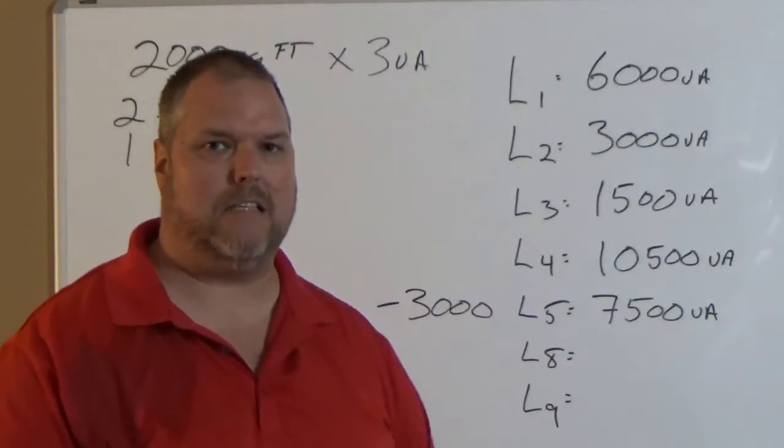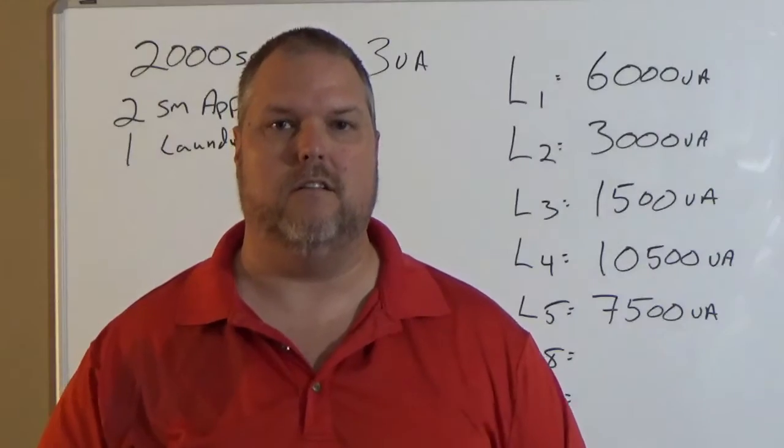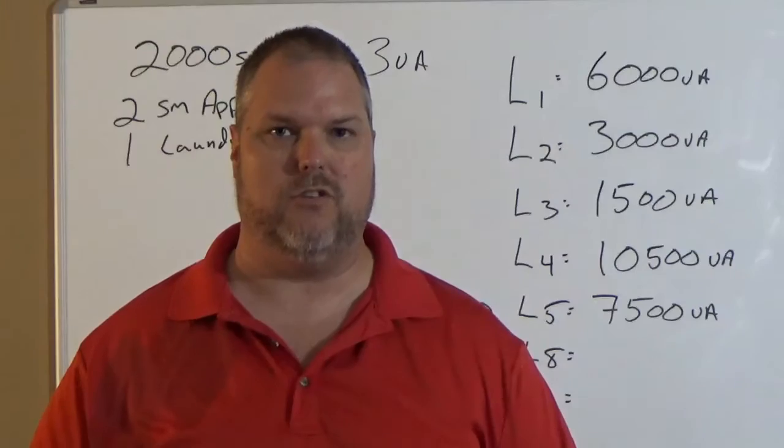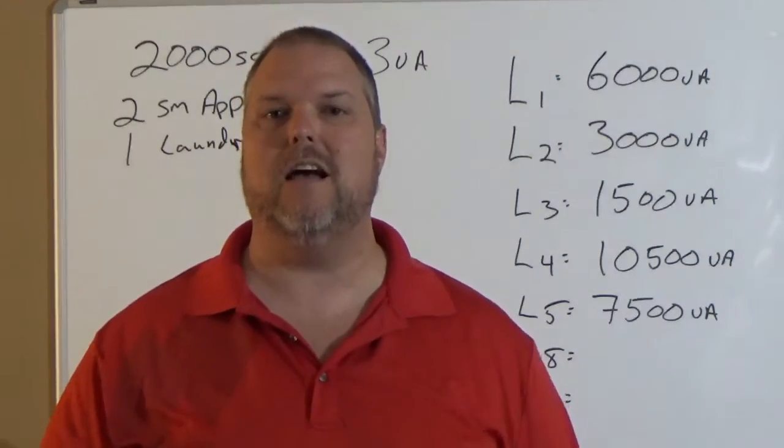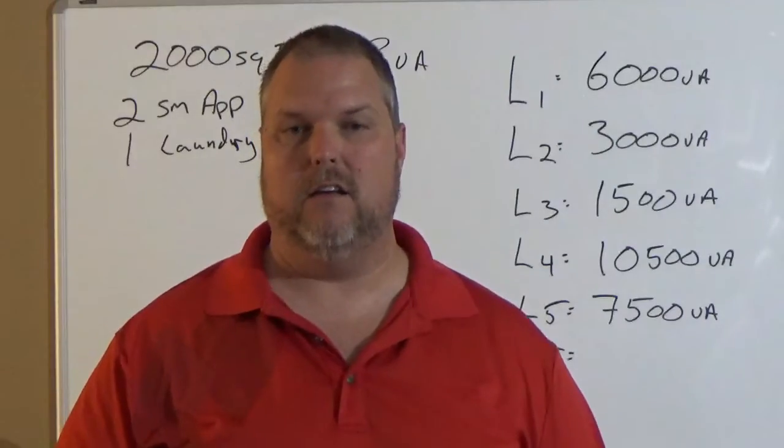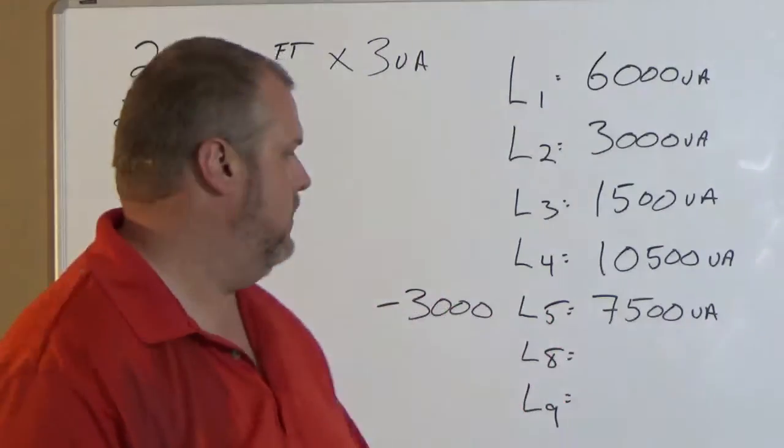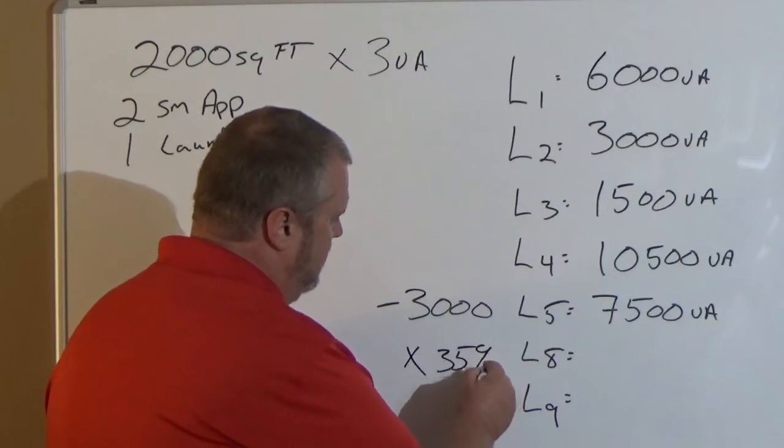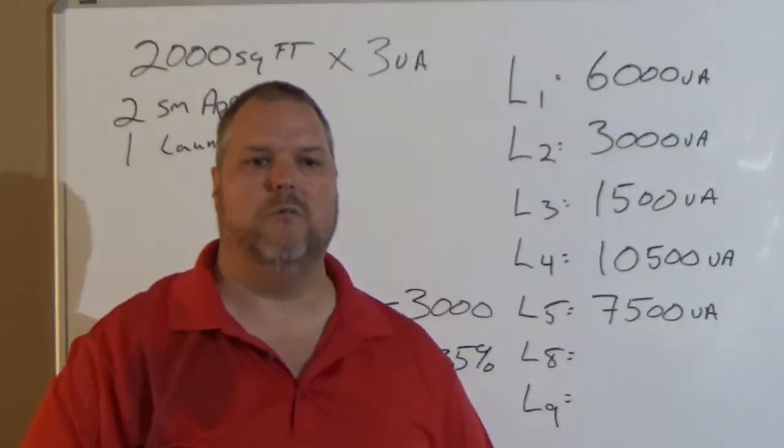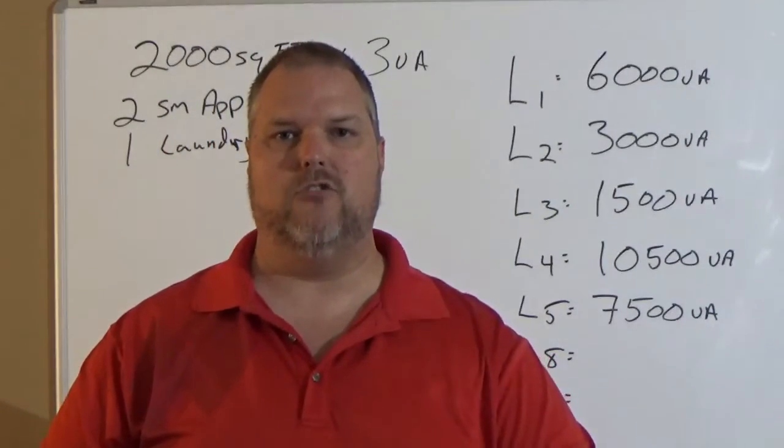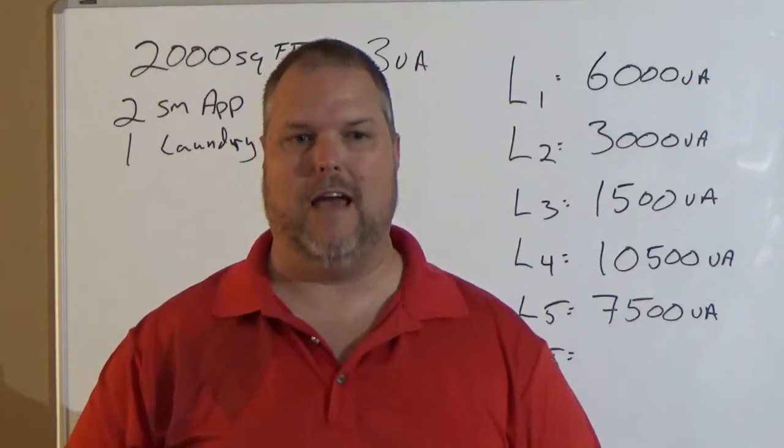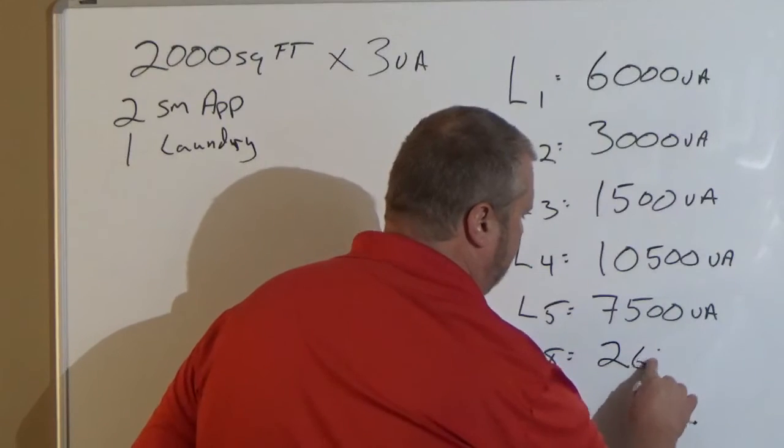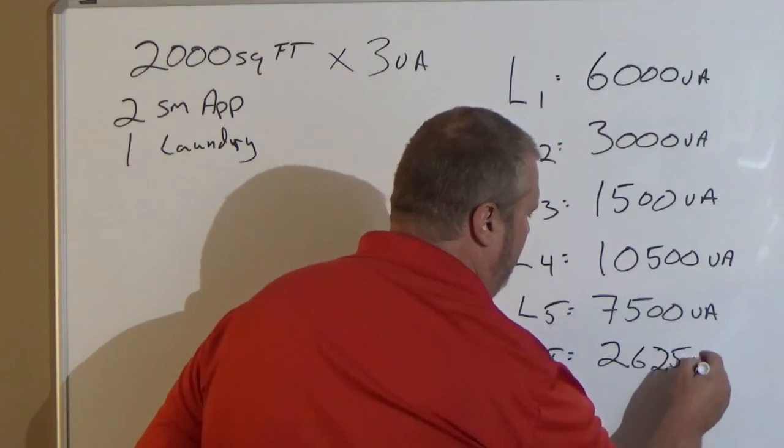We're taking 3,000 from 10,500 because that's our first 3,000 at 100%, that's going to leave us with 7,500. I skip line 6 and 7 for a reason. Because we don't have that larger number, we don't have to break it down further. So we're going to go right to line 8. Line 8 is multiply that remainder by 35%. So we take 7,500, we multiply it by 0.35 and we get 2,625 VA.